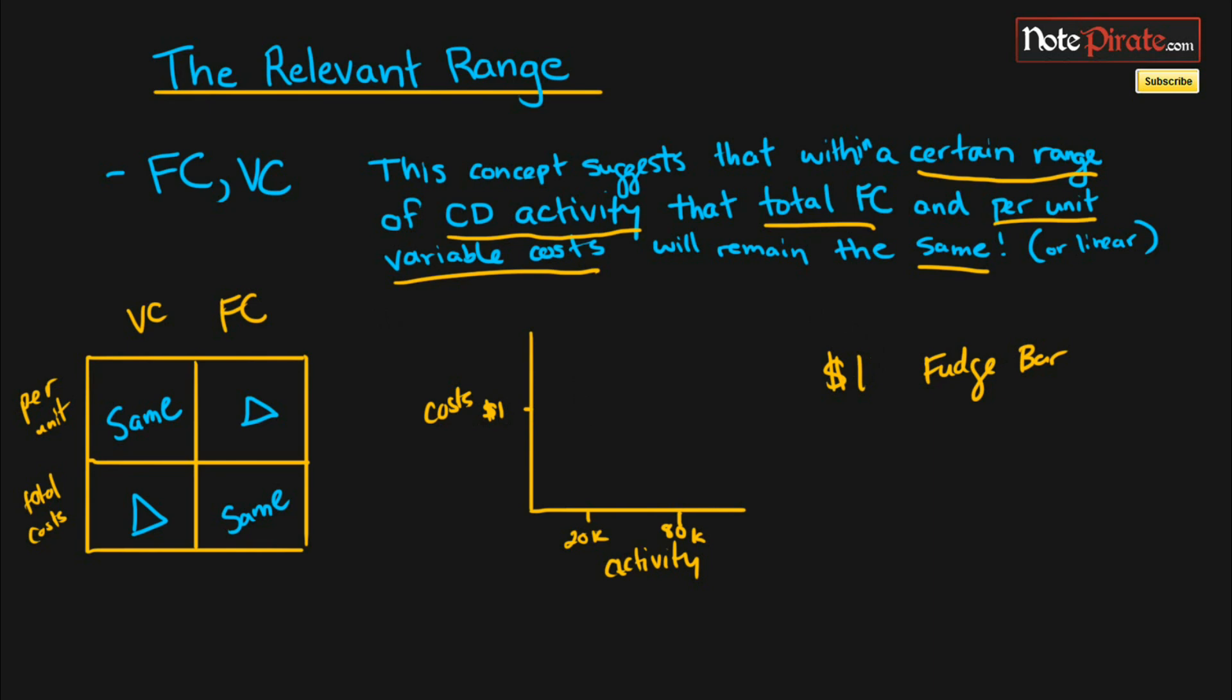So if we sell between 20,000 and 80,000 bars the cost of our variable cost of purchasing fudge bars from our supplier is going to be $1. So I'm going to quickly draw a line right there to show that it's the same within that relevant range but if we were to sell less than 20,000 then we would probably not receive bulk discounts and we might have a higher variable cost per bar and then we would have to raise prices.